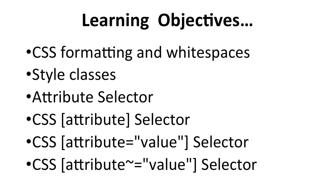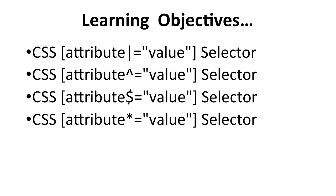In this session, we will discuss style classes and attribute selectors. The learning objectives of this particular session are: CSS Formatting and White Spaces, style classes, various attribute selectors, CSS Attribute Selector, CSS Attribute Value Selector, Attribute Value Selector with the Parallel Bar, CSS Attribute caret symbol and value selector, CSS Attribute dollar-equals value, and CSS Attribute Asterisk Value Selector.